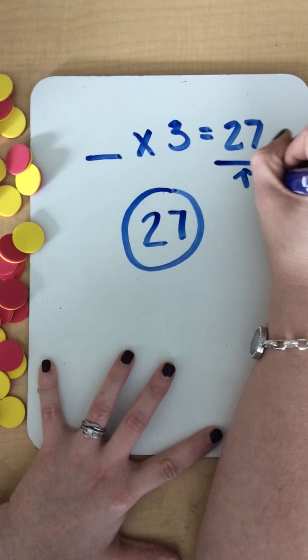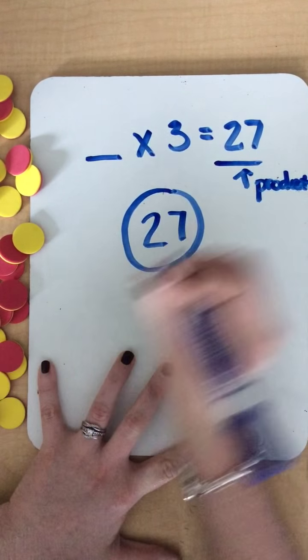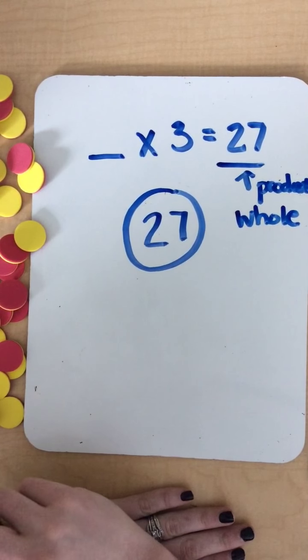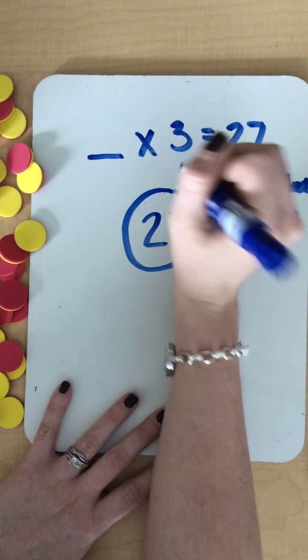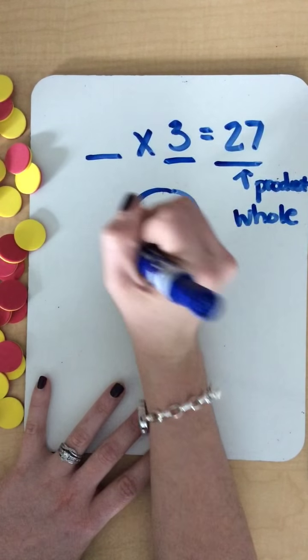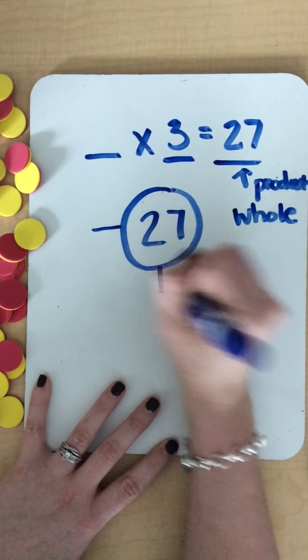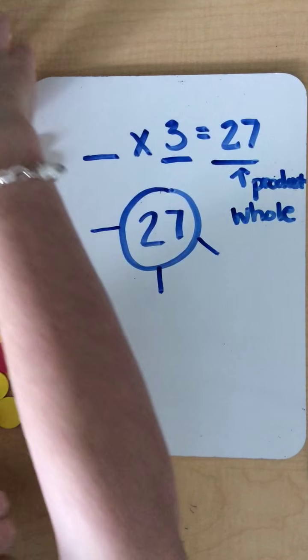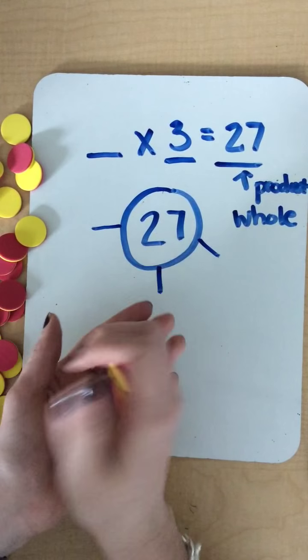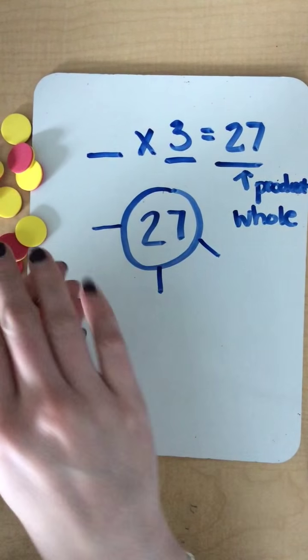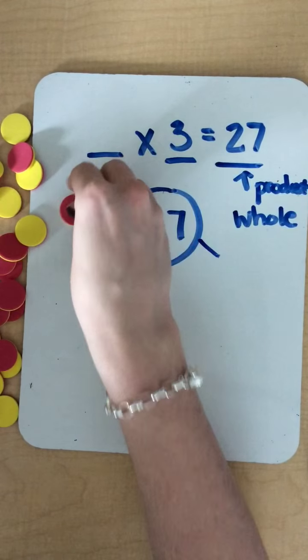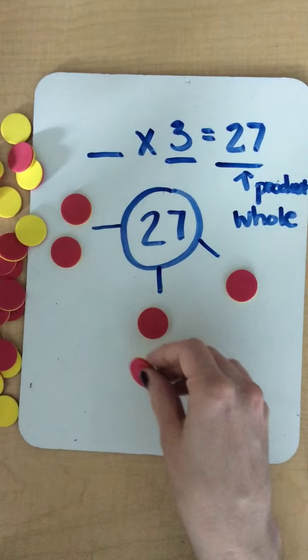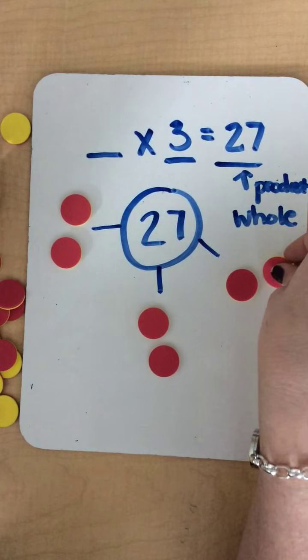The next step is I'm going to look at the factor that I do know and I'm going to draw those different arms. Then I'm going to use my manipulatives. Notice I've already gathered my manipulatives and I'm going to use those to count out until I get to my whole. I'm just going to do that and keep going until I've reached 27.